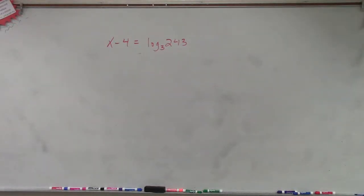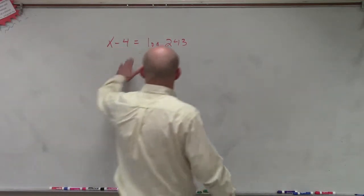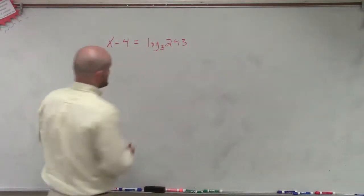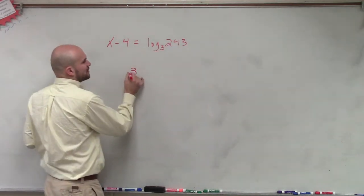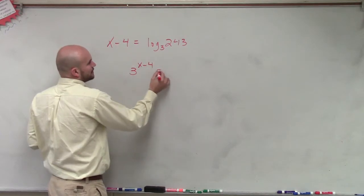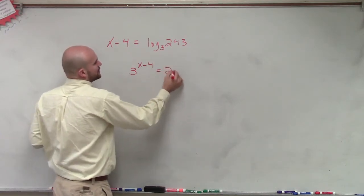So on this problem, what we're doing is we just need to convert to exponential form. This one gets a little bit more difficult because when we take it from logarithmic to exponential, we get an equation that looks like this: 3 raised to the x minus 4 power equals 243.